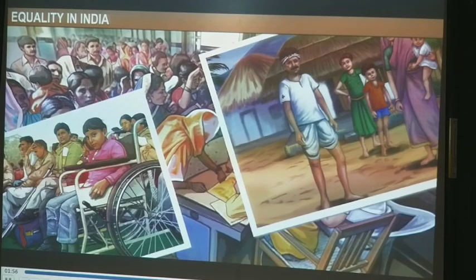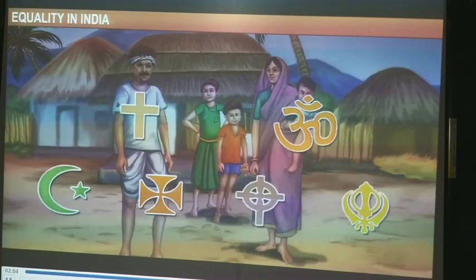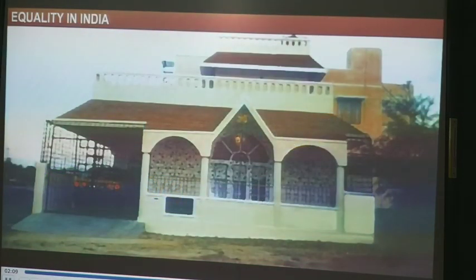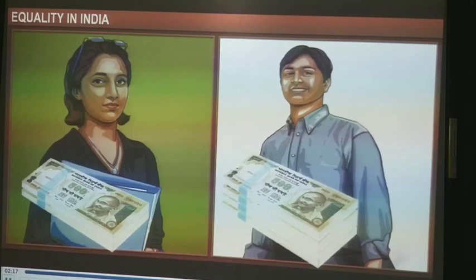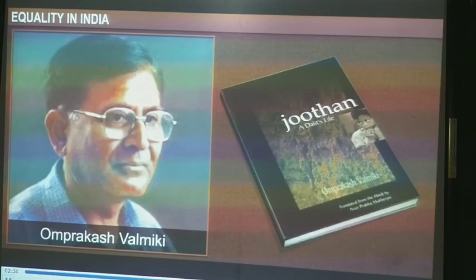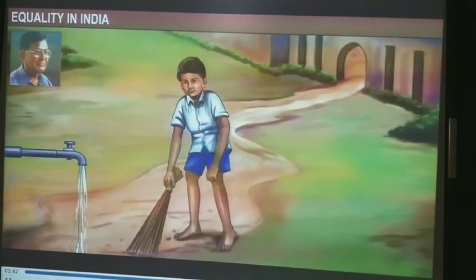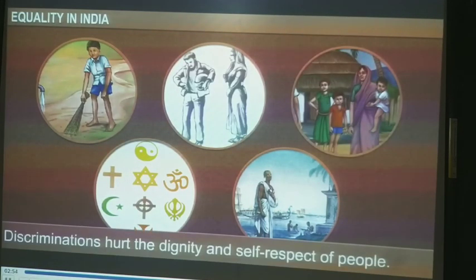Due to their poor economic background, these people cannot afford the high fees charged by private hospitals, and so they experience inequality. Apart from economic background, people are sometimes treated unequally on the basis of their religion, gender, and caste. For instance, people belonging to minority communities often face problems in getting a house in the locality of their choice. Women too have been paid less than their male counterparts for the same job. For example, female players in national and international tennis or cricket matches are paid much less than their male counterparts.